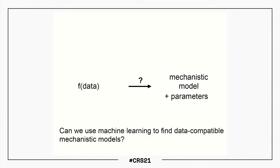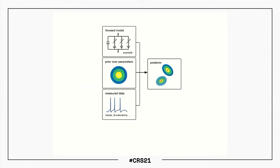So what would be useful — and we as computational neuroscientists often spend a lot of time tuning models and reasoning about which model would be the right one — is to build tools that make this process easier, in particular that help us find data-compatible models automatically.